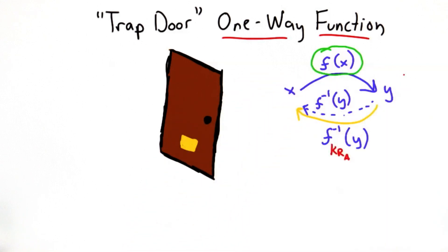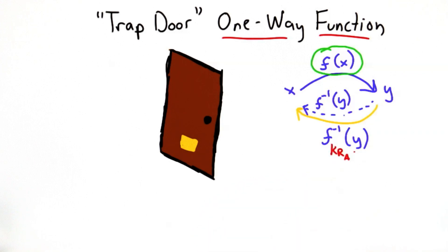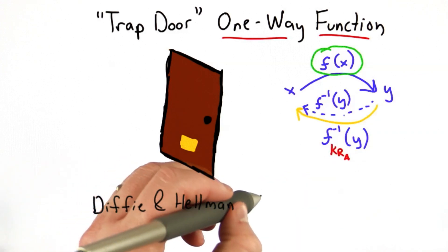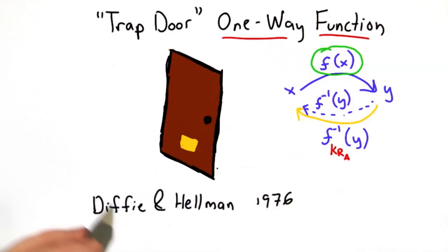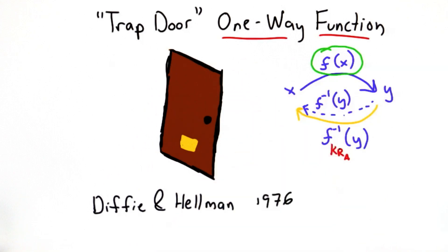But revealing the easy way to do the forward direction does not reveal the easy way to do the reverse direction. So Diffie and Hellman envisioned such a crypto system in the 1976 paper that we talked about last unit, but they didn't devise a function that had this property.